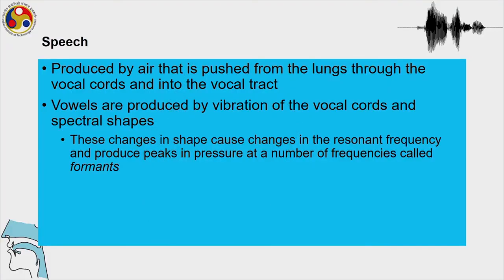Speech perception is indeed a difficult process performed by humans all the time while speaking, listening, and understanding speech. Speech is the result of air pushed from the lungs through the vocal cords and into the vocal tract. Vowels are produced by vibration of the vocal cords and the spectral shape given by the vocal tract. These spectral shape changes cause changes in resonances — the resonant frequency — producing peaks in energy and pressure at different frequencies, which are called formants.